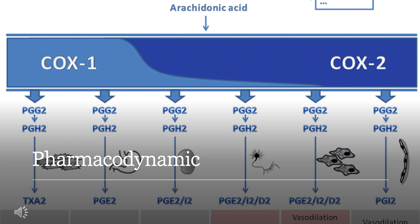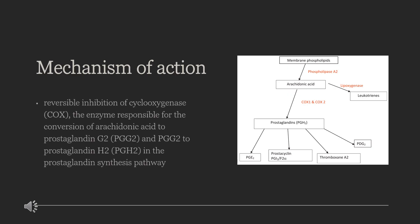Pharmacodynamics. Sulindac is a non-steroidal anti-inflammatory indene derivative, also possessing analgesic and antipyretic activities. Its exact mechanism of action is unknown. Its anti-inflammatory effects are believed to be due to inhibition of both COX-1 and COX-2, which leads to the inhibition of prostaglandin synthesis. Antipyretic effects may be due to action on the hypothalamus, resulting in increased peripheral blood flow, vasodilation, and subsequent heat dissipation.